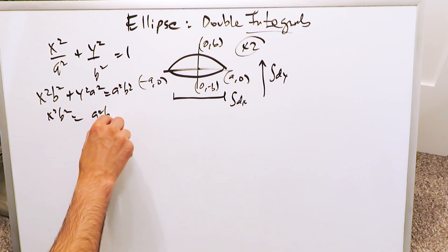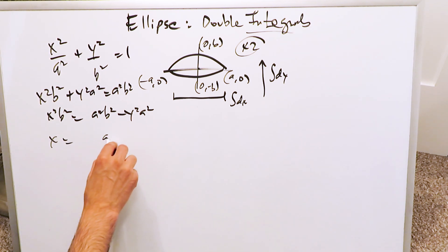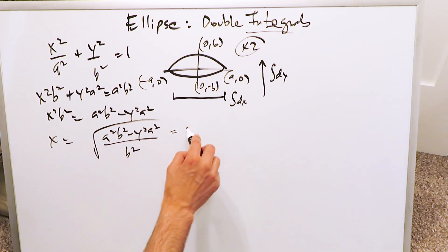x squared b squared is equal to a squared b squared minus y squared a squared, and you solve for x. You have a squared b squared minus y squared a squared over b squared, and you square root that. You can isolate from here an a squared.